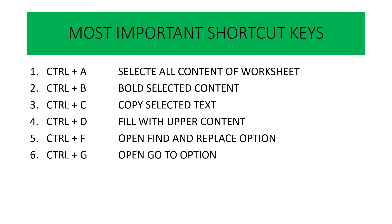Next is Ctrl G. Ctrl G की मदद से हम go to option में जाकर किसी particular cell में जा सकते हैं. Ctrl G press करने पर एक dialogue box open होता है; reference में A5 लिखने पर directly A5 cell में पहुंच जाते हैं, उसी तरह V5 लिखने पर V5 cell में. So Ctrl G is used to open the go to option.